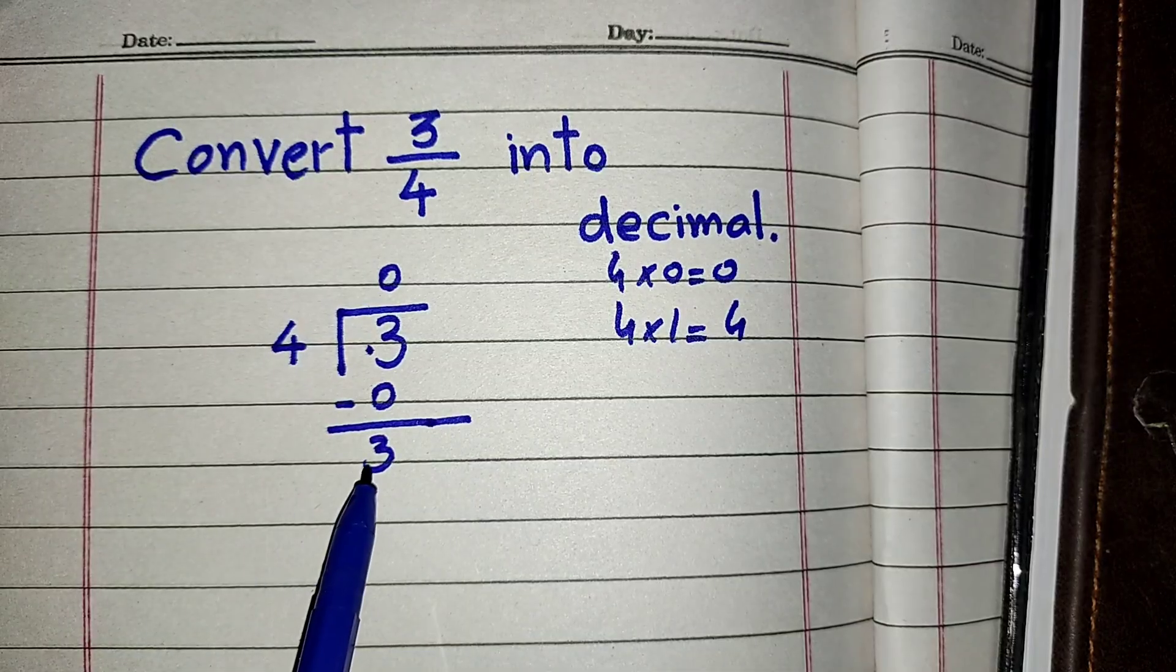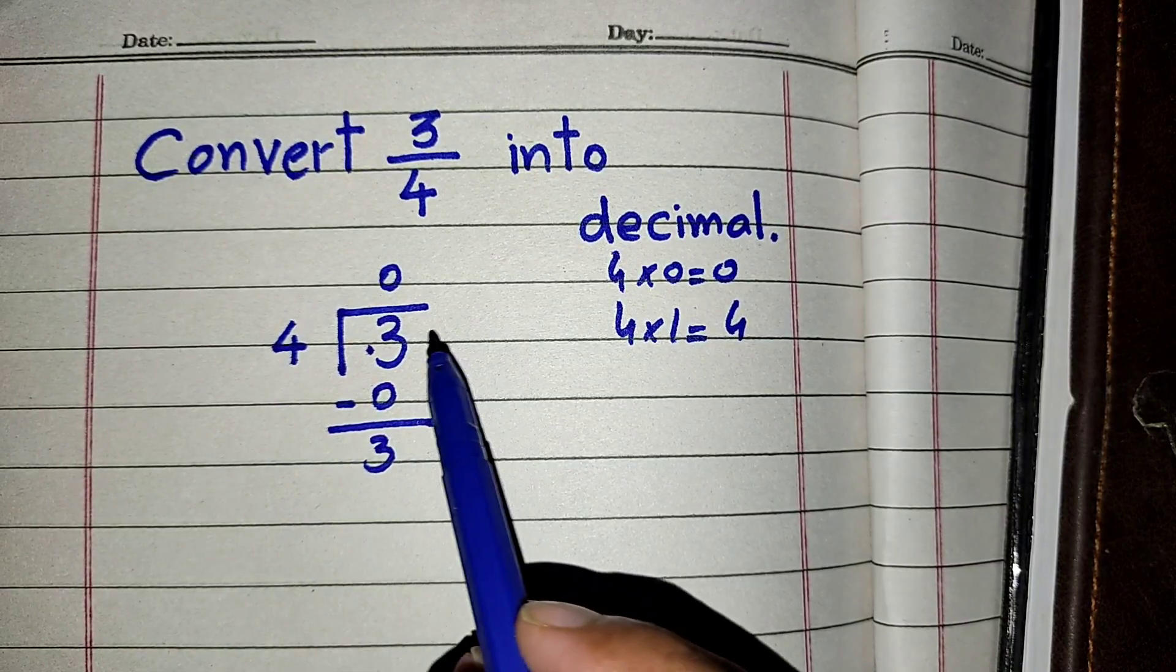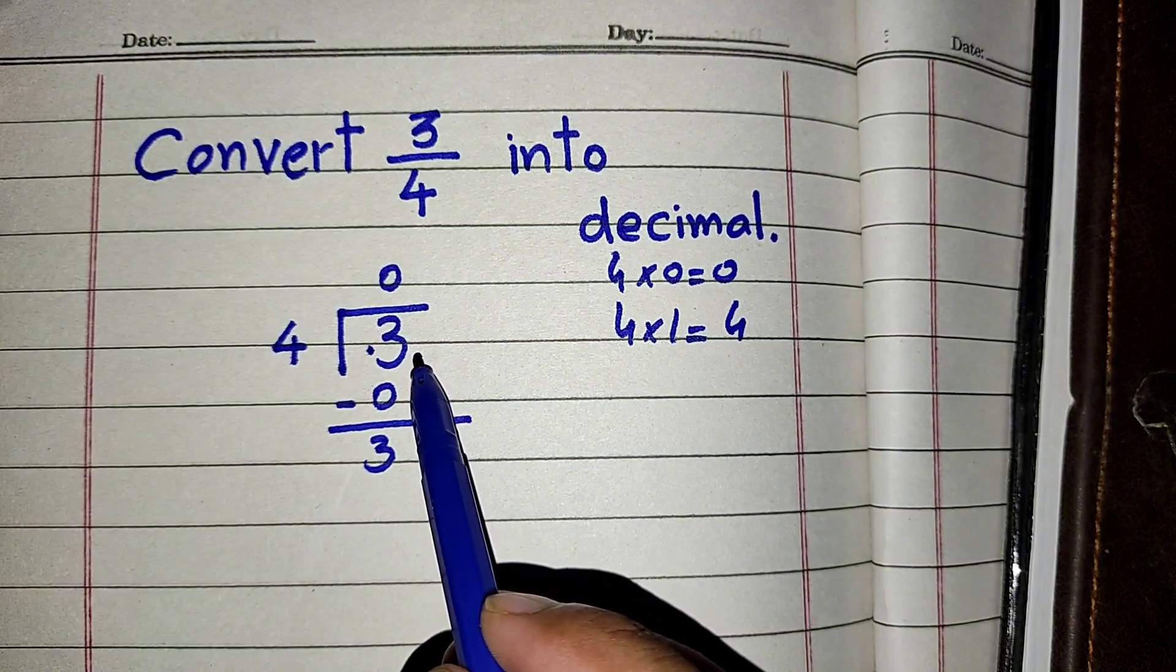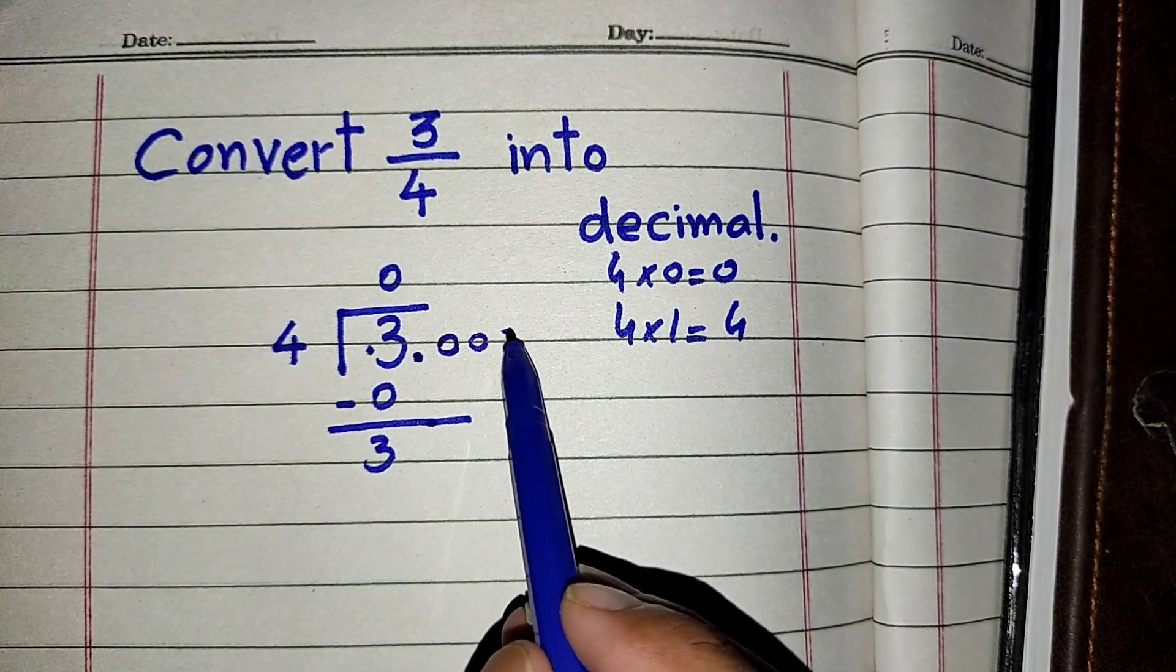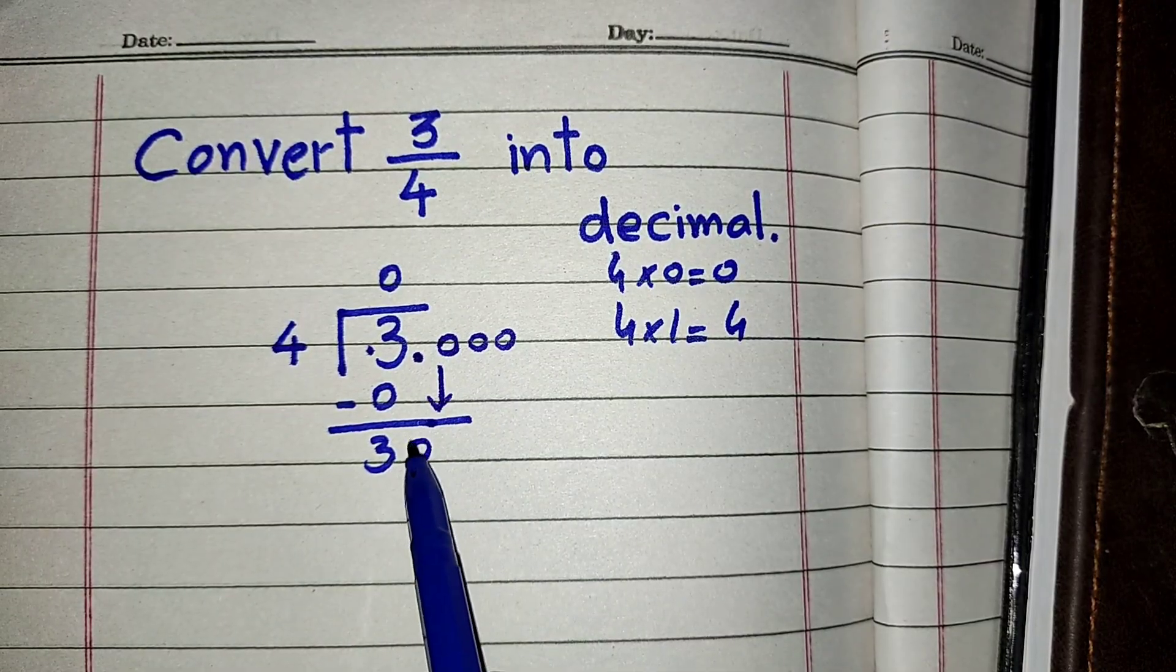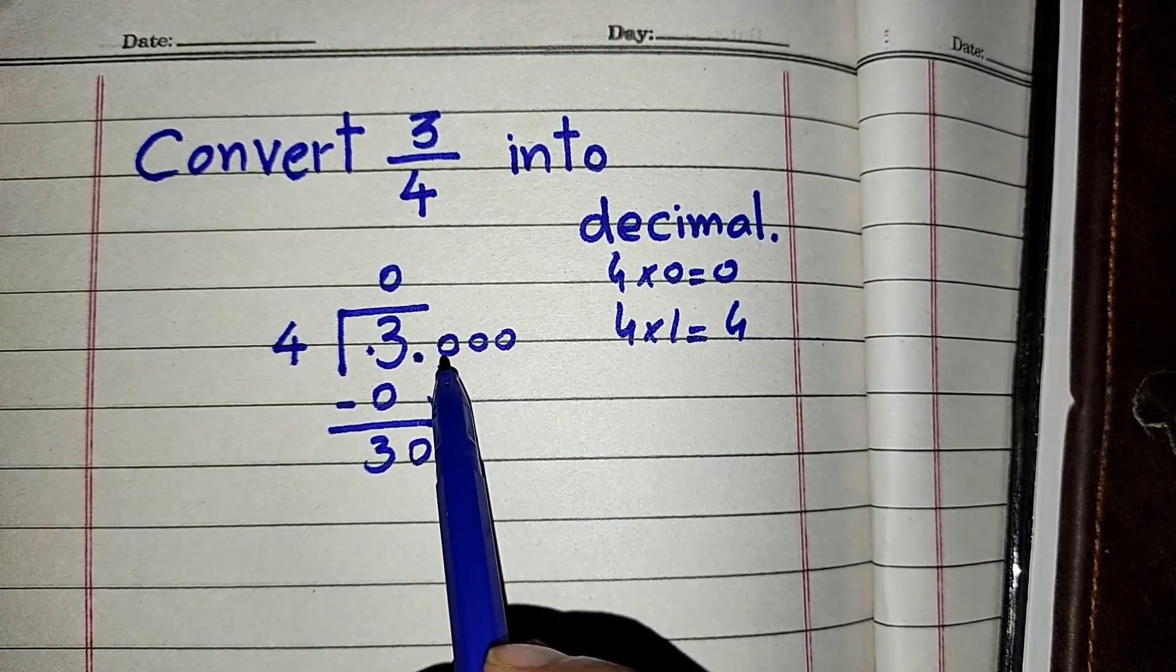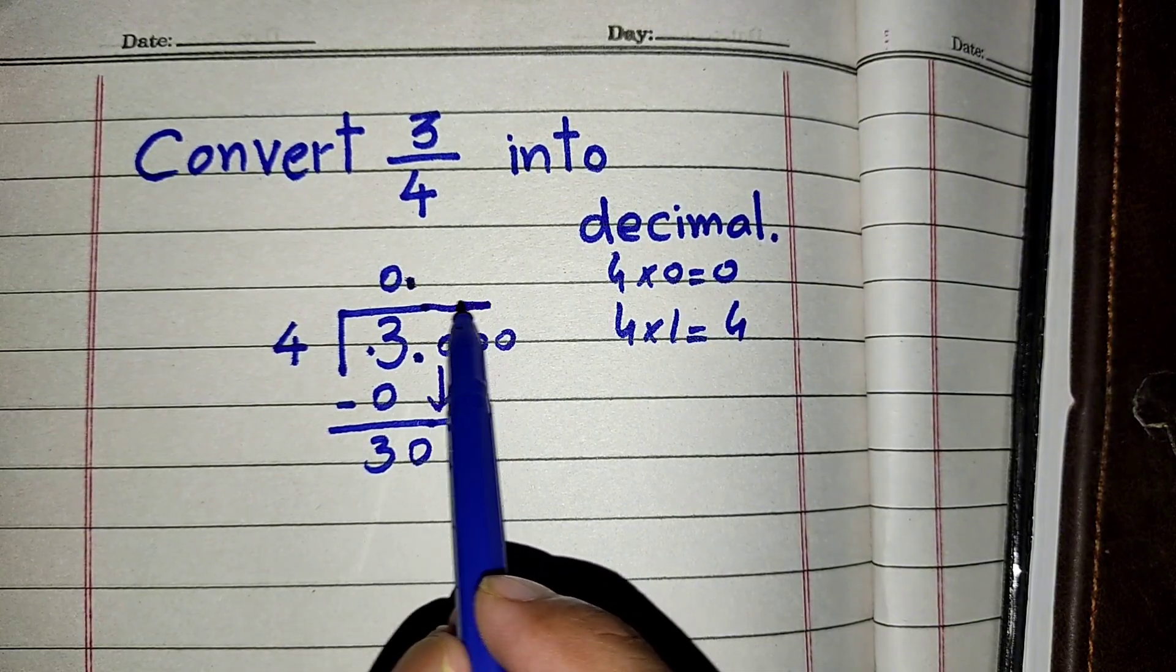We have 3 here and 4 does not fit into 3, so we have to check the decimal point. After the decimal point we have many zeros. We can bring down one zero in this step, and when we bring down this zero we have to put a decimal point above in the quotient.